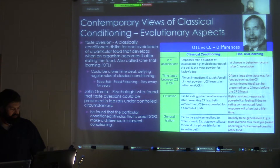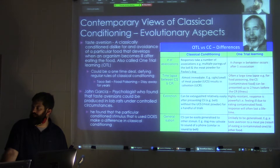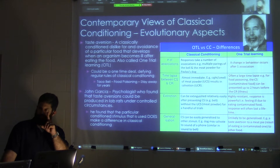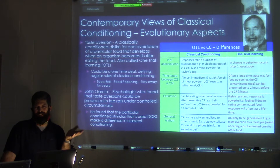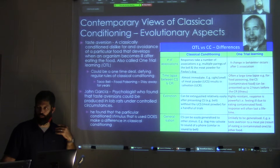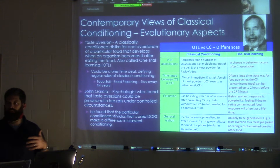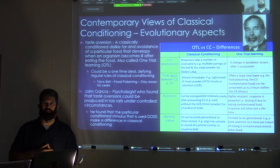Taste aversion — this is John Garcia. He found something interesting: you can learn by classical conditioning where acquisition is a one-time deal. For example: I ate Taco Bell, I got sick and threw up, and I never ate Taco Bell again. That is taste aversion, also known as one-trial learning or one-time learning — it was so intense that you don't have to go through the full acquisition phase.